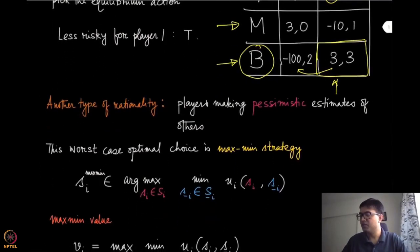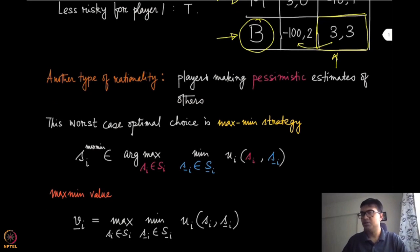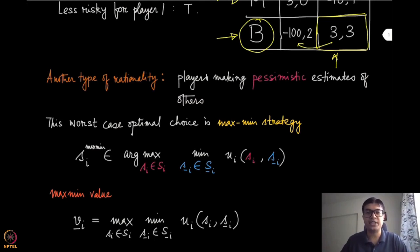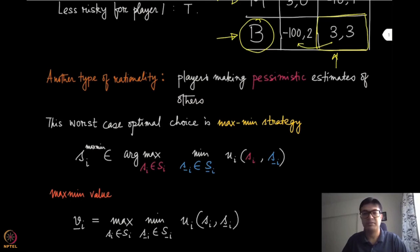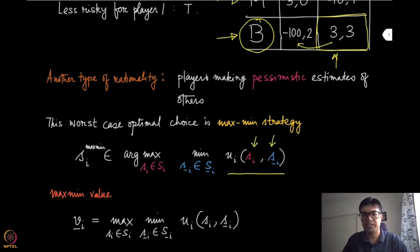That is exactly what we mean by a pessimistic estimate. Agent one is doing a pessimistic estimate of the other players. This is what we call the maximin strategy — you are assuming as if all the other players together are trying to minimize your utility as much as possible, and you are trying to pick the action or strategy that maximizes it. So you can look at this expression from inside out: a specific utility of player i is given by the strategy it picks and the strategy that all the other players pick.